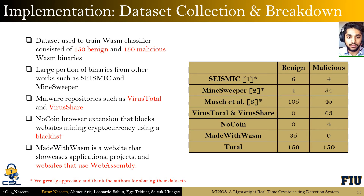Before discussing the implementation, let's talk about the dataset used to train the WebAssembly classifier. It consisted of 150 benign and 150 malicious WebAssembly binaries compiled using various resources. Seismic, Minesweeper, and Mush et al. are papers in the literature that worked with WebAssembly-based cryptojacking malware samples and shared their datasets. We used VirusTotal and VirusShare to collect additional samples — VirusShare for bulk collection and the VirusTotal API to filter for cryptojacking malware using WebAssembly. NoCoin is a blacklist of websites known to implement cryptojacking malware, and Made with WebAssembly showcases projects and web applications that use WebAssembly.